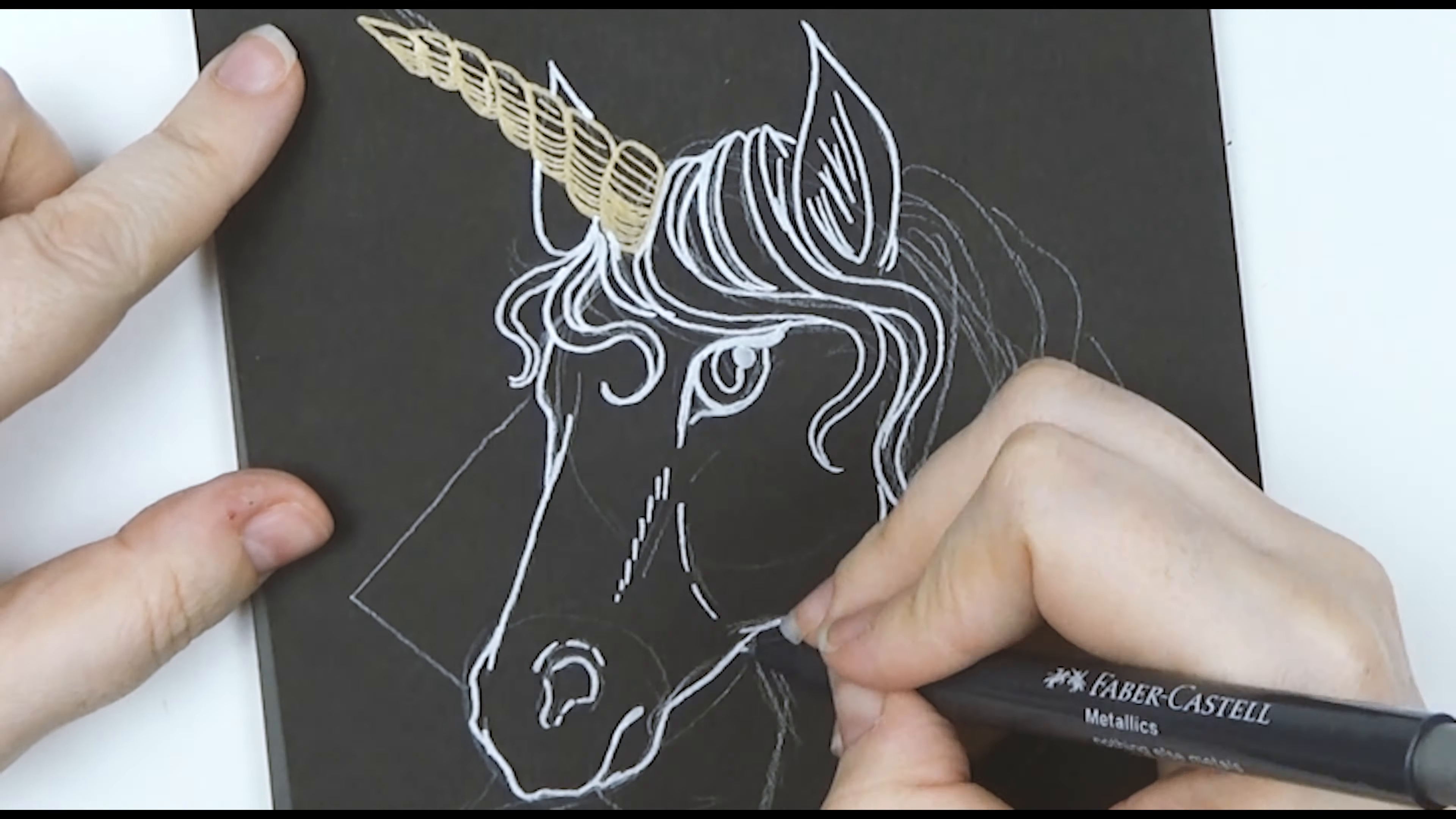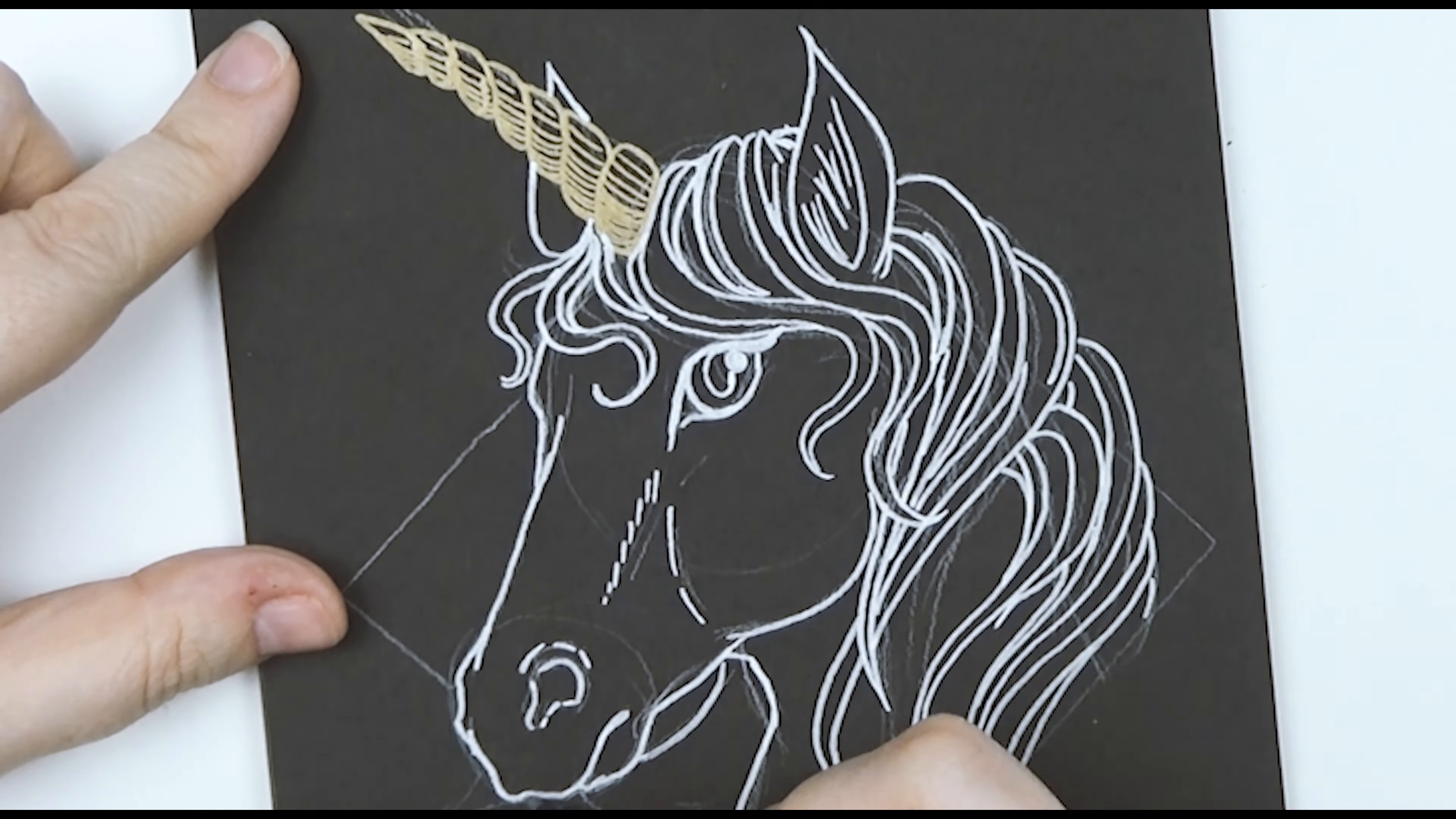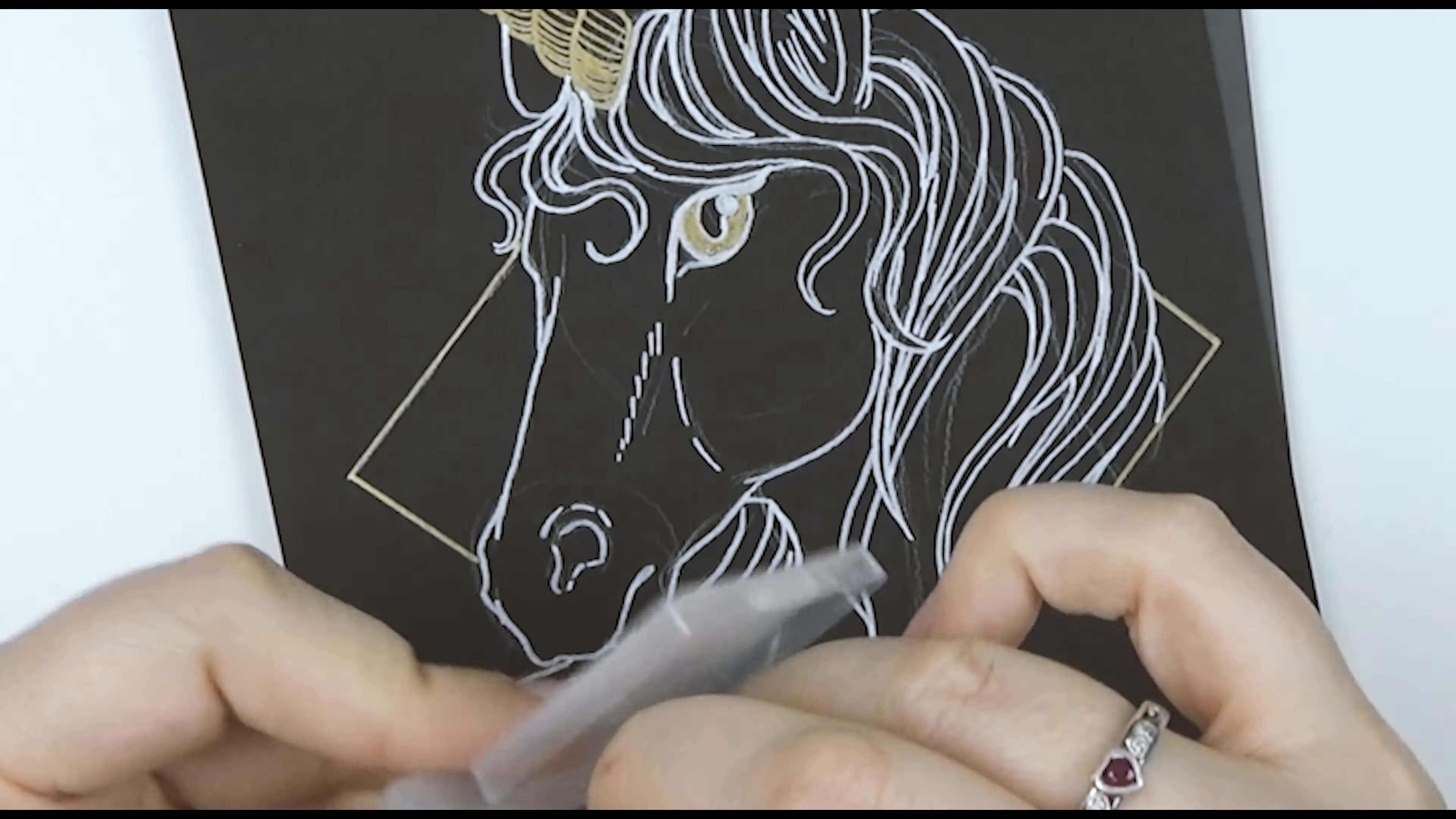So learning from the mistakes that I made in the first one, I used the silver marker to do the outline. And that was, as you can see, it's a lot more dramatic on the black, which I really liked. And then I used the gold to draw the square in the background, add a little bit of an accent to the horn and eyes.